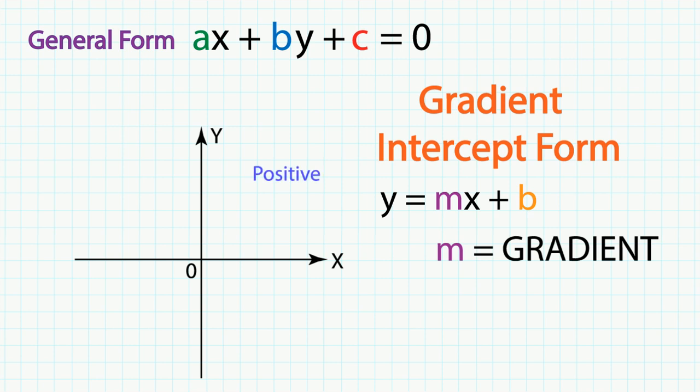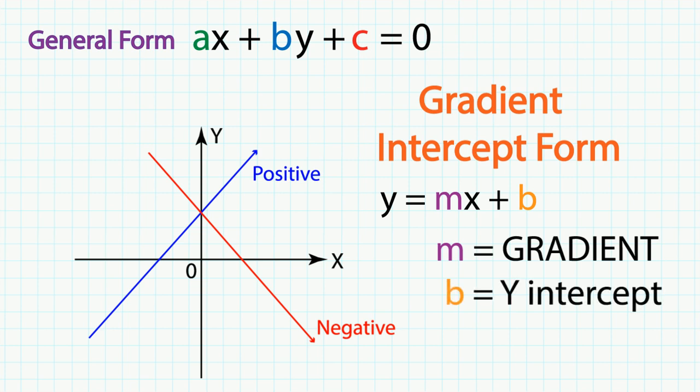It is positive when the line goes up from left to right. It is negative when the line goes down from left to right. And finally, b is called y-intercept and I'll explain what it is in later part of this video.